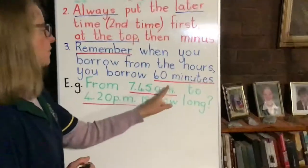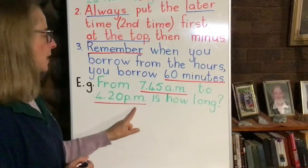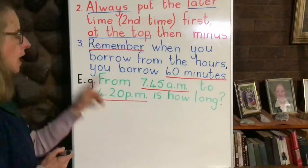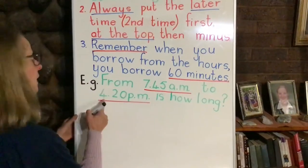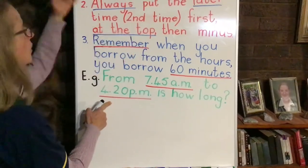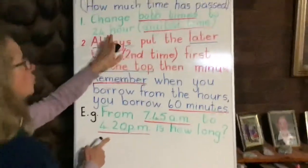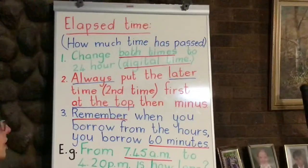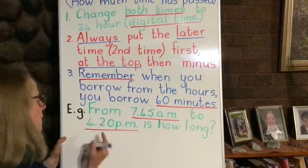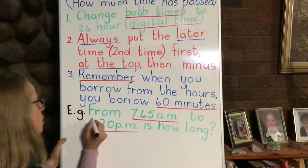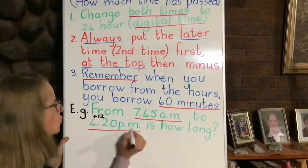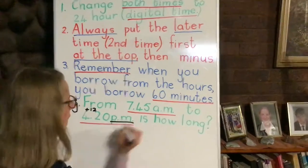So from 7:45am to 4:20pm — 4:20 is the second time given, it's the later time, so that goes at the top. The first point says to change both times to 24-hour digital time. So we're going to add on 12 hours first here because we're converting it to 24-hour time and it's PM.